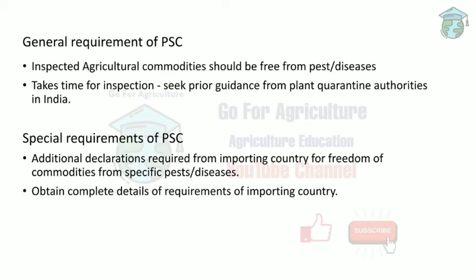The general requirements of the phytosanitary certificate are: the plant being imported must be free from pests, and plant quarantine authorities must conduct an inspection. Special requirements include additional declarations required by the importing country confirming freedom from specific diseases or pests. For example, if Australia is sending a plant to India, India must give specific permissions and Australia must have all relevant information regarding India's requirements.